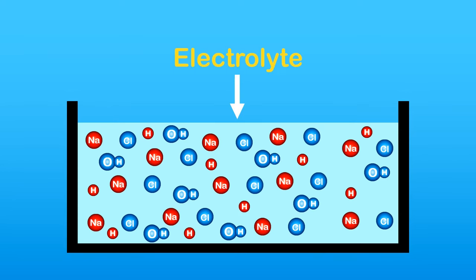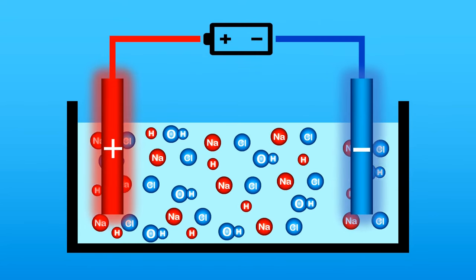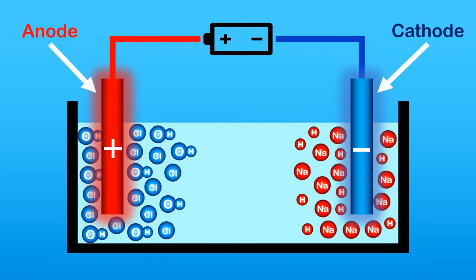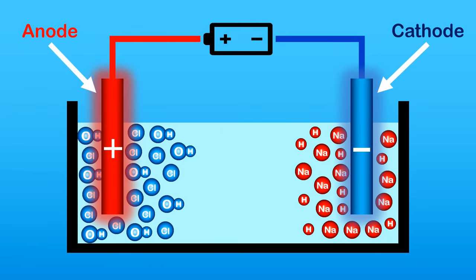This is our electrolyte, the substance that we're splitting. Then the positive sodium and hydrogen ions are attracted to the negative cathode, and the negative chloride and hydroxide ions are attracted to the positive anode.